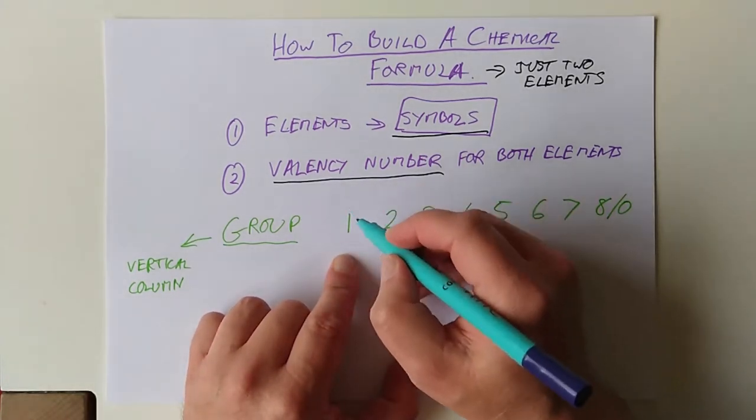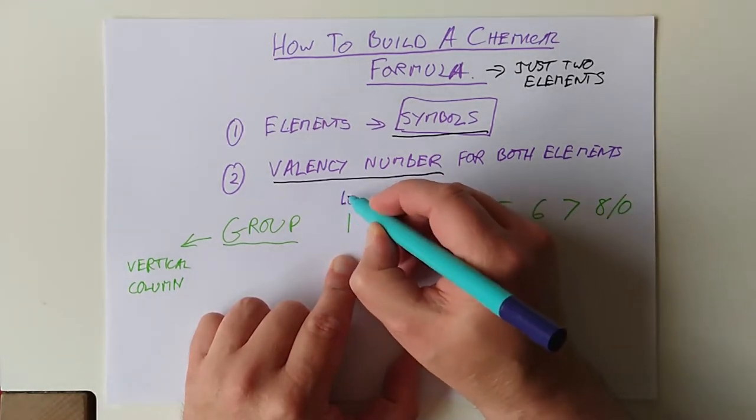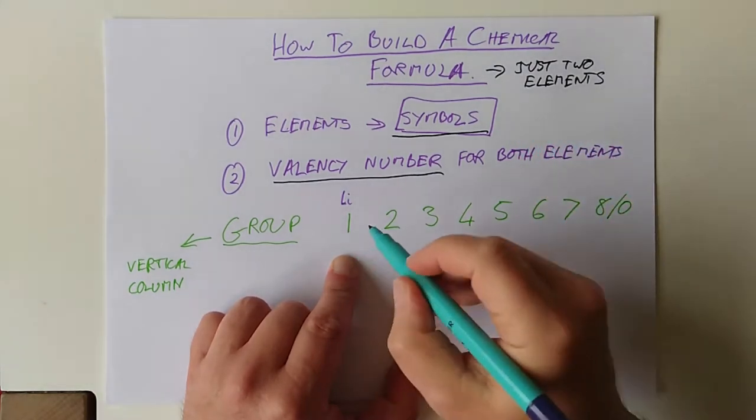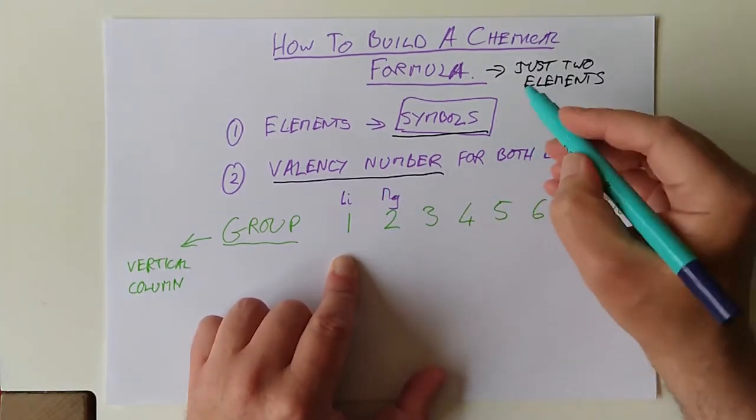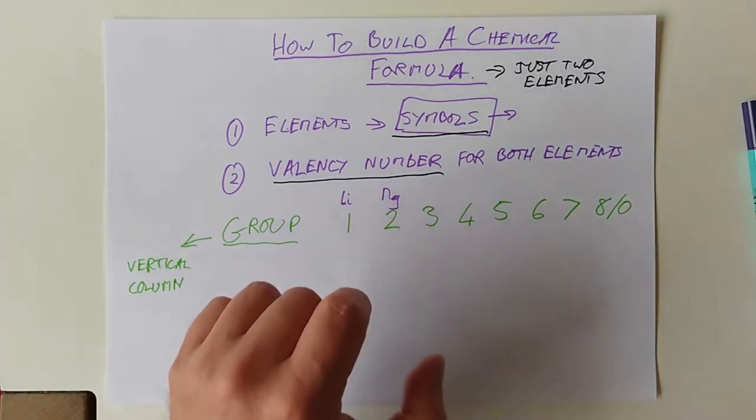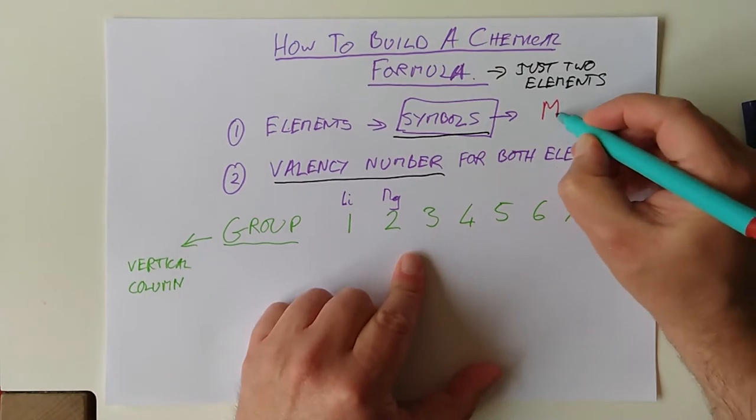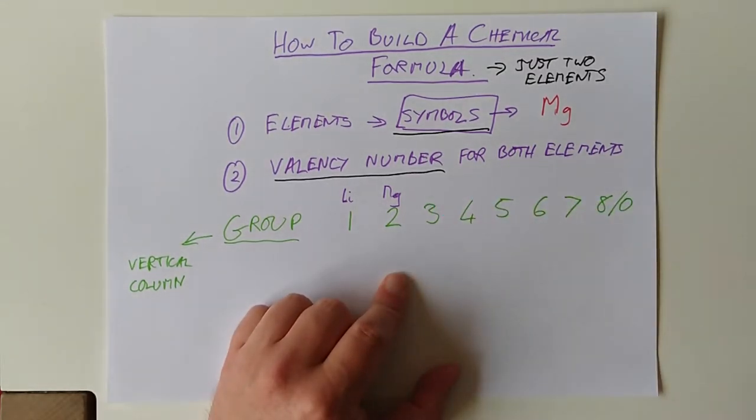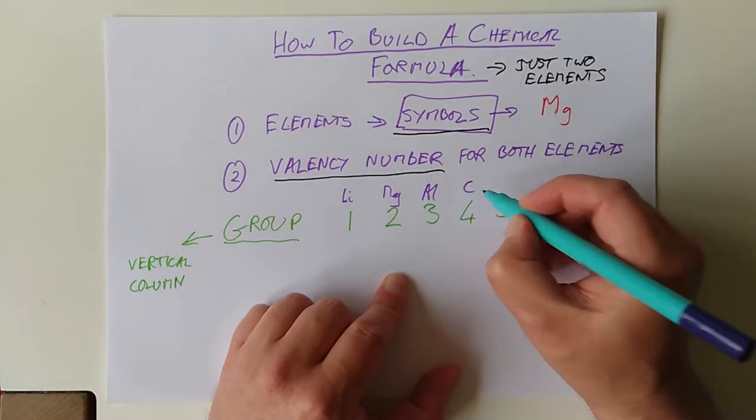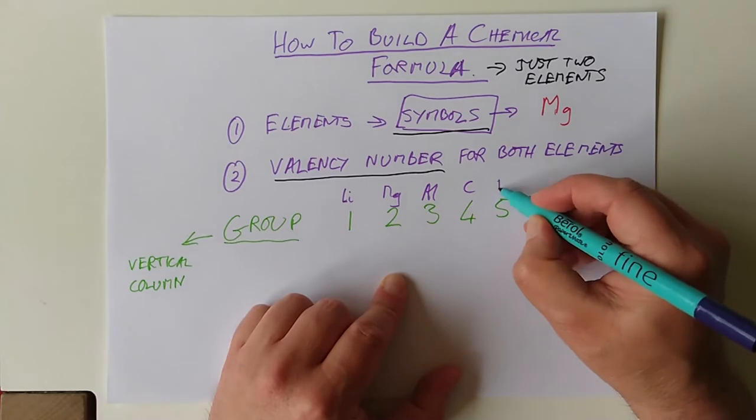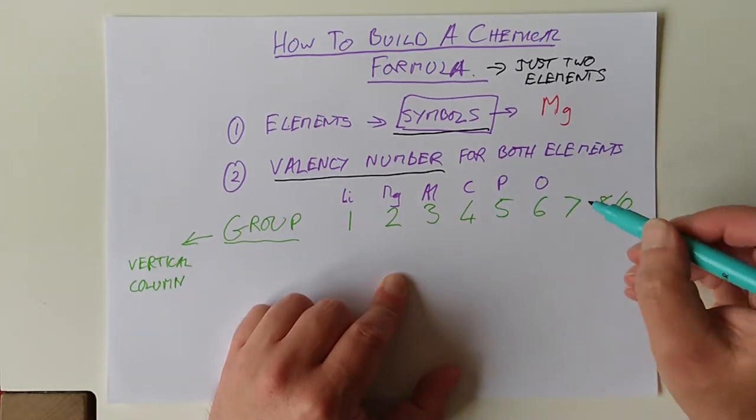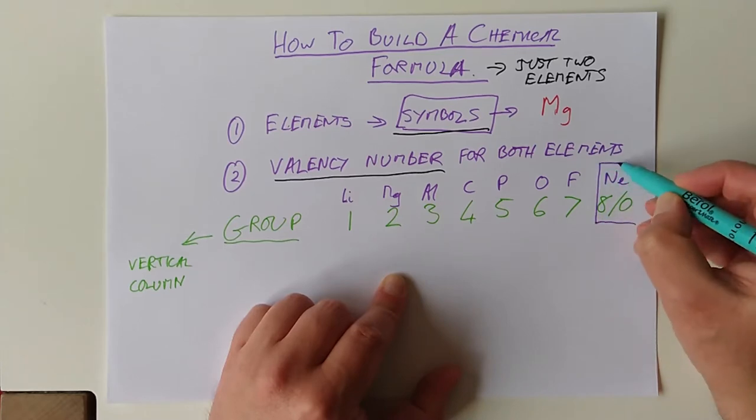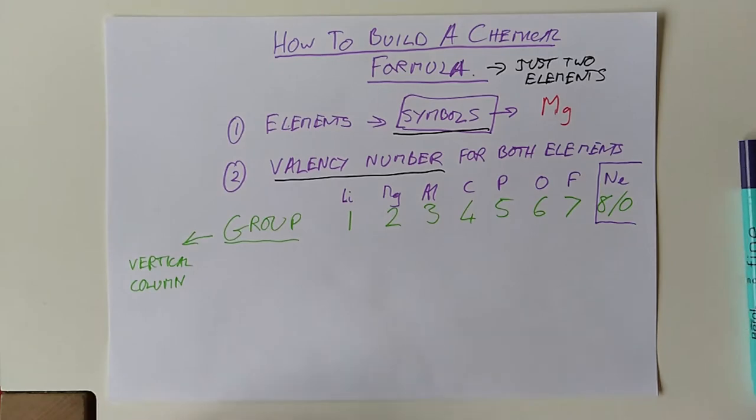Just in case you need a little bit of revision. That's the problem with chemistry, isn't it? Everything builds on everything else. A group is a vertical column, so it's an up and down column of elements on the periodic table. That's what a group is. And the groups were numbered 1, 2, 3, 4, 5, 6, 7. This is gripping video, isn't it? 8 or 0. Sometimes it depends how old you are. Because I'm a bit of an old fart, I call that group 8. I think they're called group 0 nowadays.